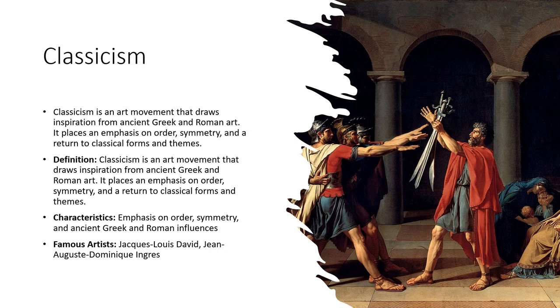You have cubism, and cubism is a style of art that breaks down objects and figures into geometric shapes and multiple perspectives, often resembling fragmented forms. The characteristics are geometric form and multiple perspectives. This is a painting by Pablo Picasso — one of his lesser-known paintings. It deals with the human form even though it's not a realistic portrayal; it's non-realistic.